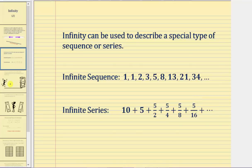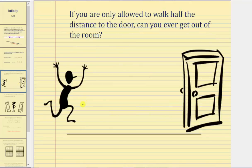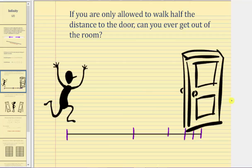Now let's take a look at a couple of situations. Let's say you're only allowed to walk half the distance to the door — can you ever get out of the room? If you start here and the door is here, and you're only allowed to walk half the distance to the door each time, you would reach successive points in the room, and so on. The question is: if you can only walk half the distance to the door each time, will you ever get out of the room? The answer is no.